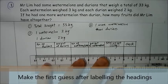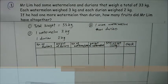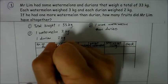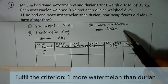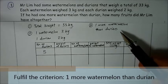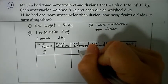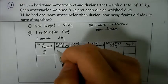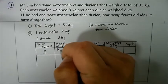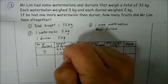Let us make a guess for the number of durians. Let's say we have 5 durians. The second criterion states that Mr. Lim has one more watermelon than durian, so the number of watermelons will be 6. The weight of each durian is 2 kg, so in the weight of durians column I write: 5 durians × 2 kg = 10 kg.